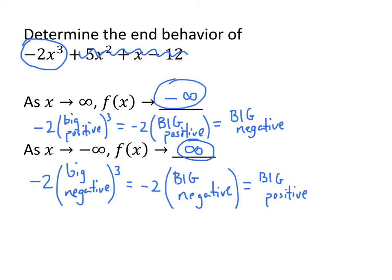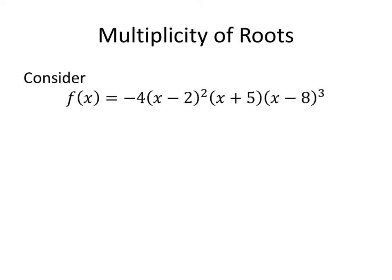So that's the idea: look at the leading term, think about what happens when x is a big positive number, and think about what happens when x is a big negative number. Now we need to think about the roots.